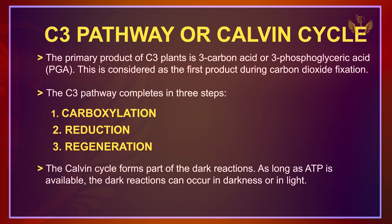The dark reaction, which we also know as the C3 cycle or Calvin cycle, has basically three steps: Carboxylation, Reduction, and Regeneration.